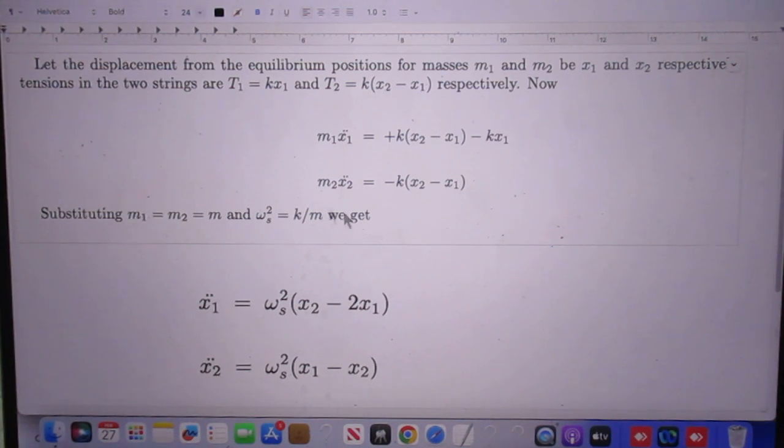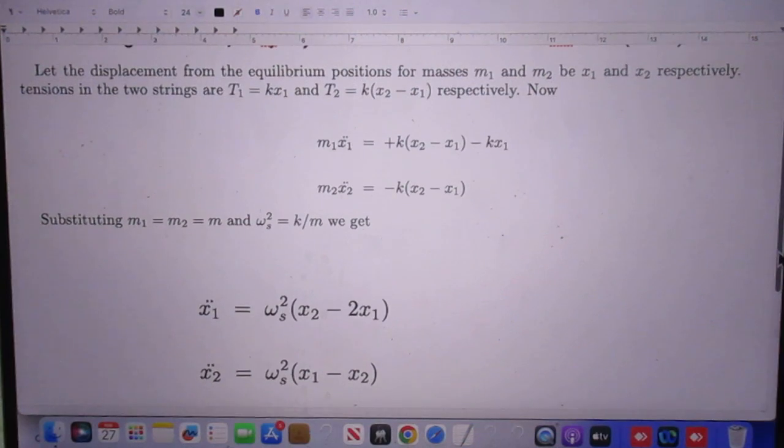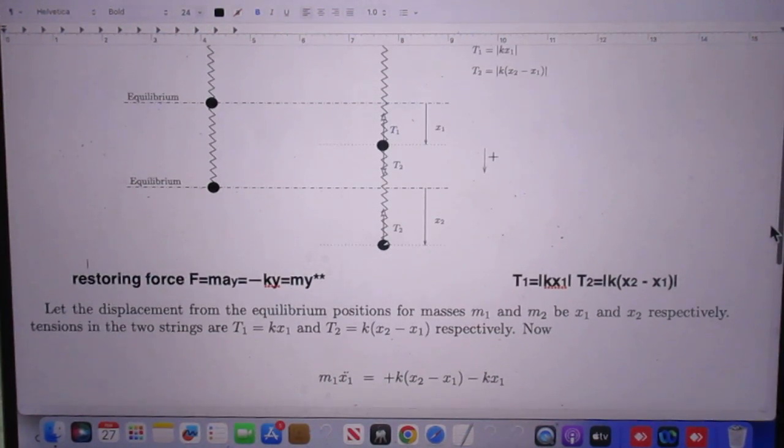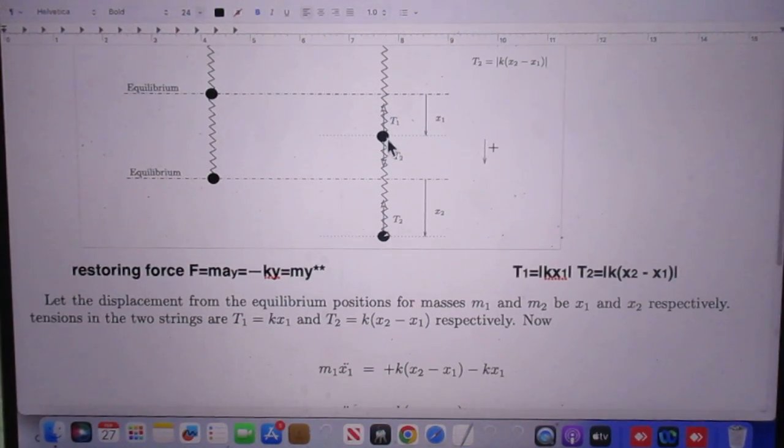We now write down the differential equations for these two objects. Now, let's go to object number one. m x1, double point, second derivative in time. It is minus T1. Here you see the minus k x1. And it is plus T2. So here you see the plus T2.